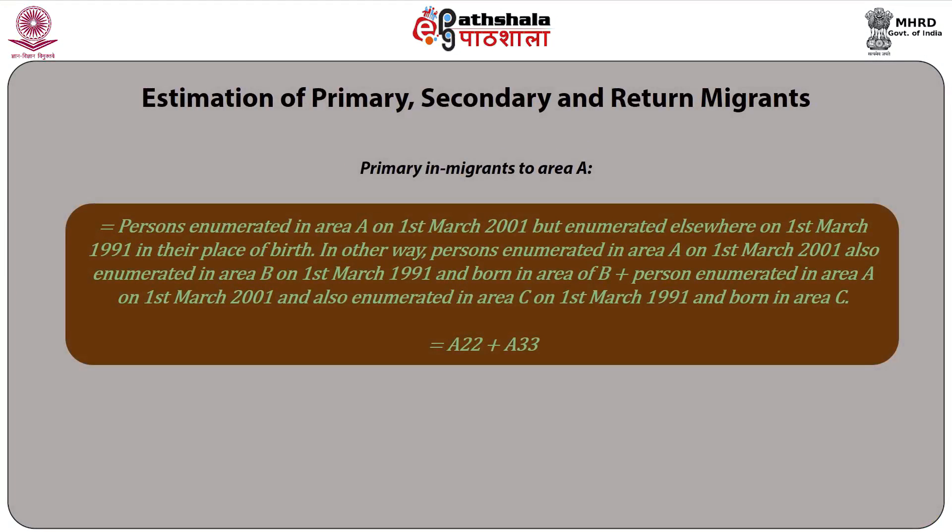Primary in-migrants to area A equal persons enumerated in area A on 1st March 2001 but enumerated elsewhere on 1st March 1991 in their place of birth. In other words: persons enumerated in area A on 1st March 2001, also enumerated in area B on 1st March 1991 and born in area B, plus persons enumerated in area A on 1st March 2001, also enumerated in area C on 1st March 1991 and born in area C. This equals A22 plus A33.